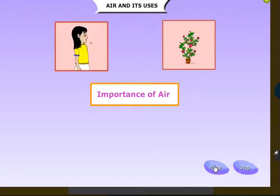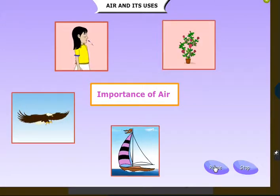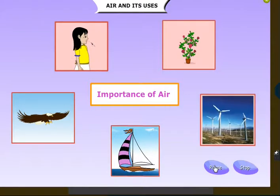It helps us breathe and live. The protective blanket of air around the earth keeps it from getting too hot or too cold. If there was no air, we would not be able to hear each other speak. All constituents of air are useful to us. We need oxygen. Plants need carbon dioxide and nitrogen. The water vapor in the air helps give us rain.